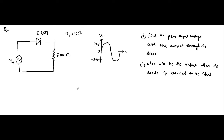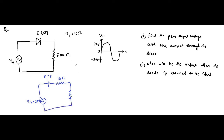If we redraw the circuit for the diode, we replace it with its potential barrier voltage of 0.7 volt — because it is a silicon diode — and the forward resistance of 10 ohm. The peak condition happens when the input voltage is at its maximum value of 20 volt. This circuit will operate only during the positive half cycle.